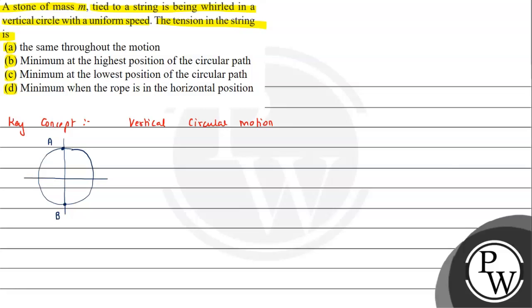We have to find the tension at the lowest and highest points. If we find the tension at point A and point B, then we will solve these two. When we calculate the tension at A and tension at B.